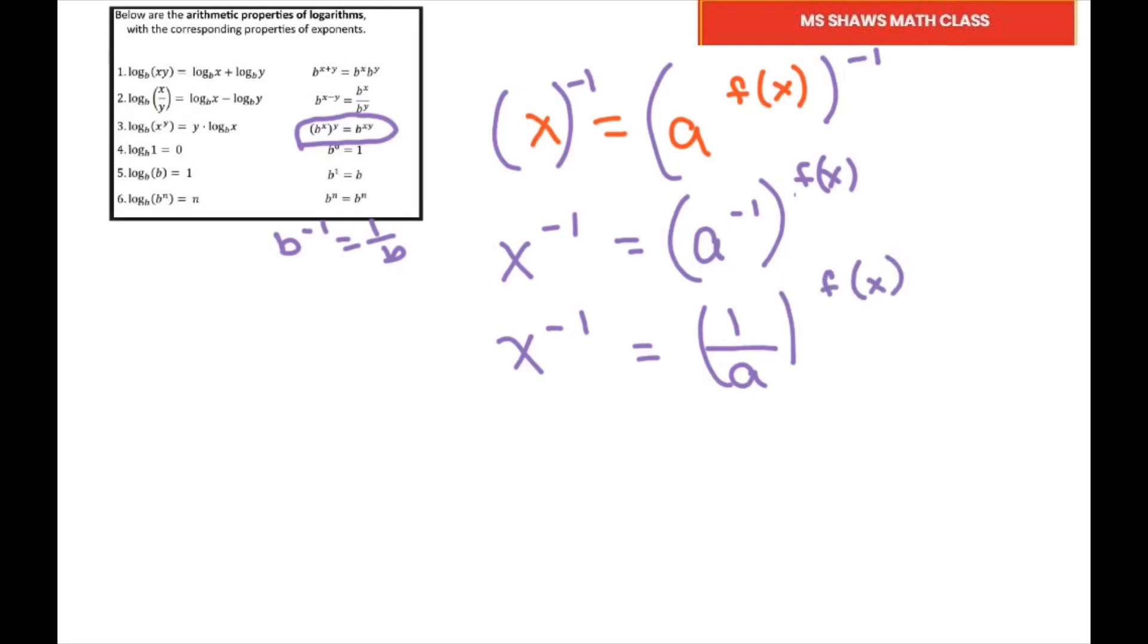Now I'm going to rewrite it back into the log form. So my power is F of X, so I'm going to write F of X equals log, your base is going to be 1 over A, 1 divided by A, and then you have your value which is X to the negative 1.